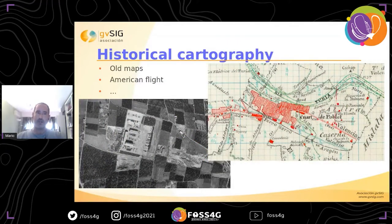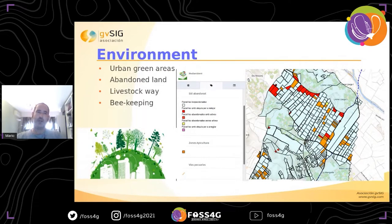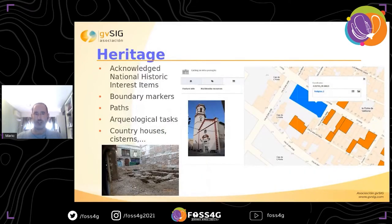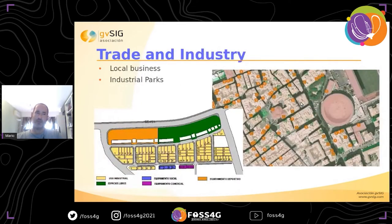About historical cartography, you can have all information about old maps and orthophotos from different years. About environment, you can have private and public layers for managing parks, green areas, and abandoned lands. You can also manage urban waste — skips, recycling sites, and clean spots. About heritage, you can have all information with paths, archaeological sites, boundary markers, and you can link PDF files or images to different elements in the viewer.